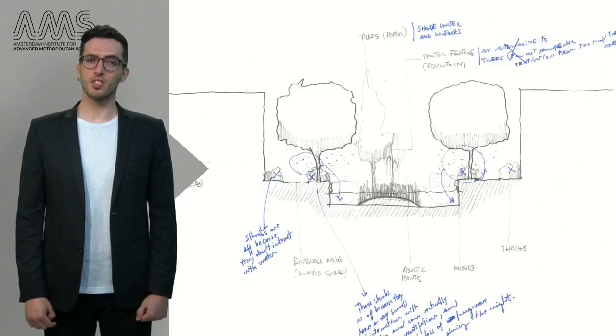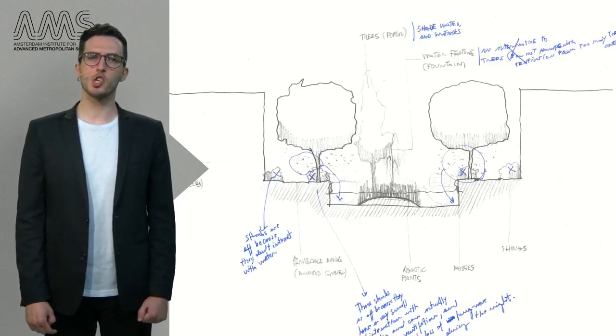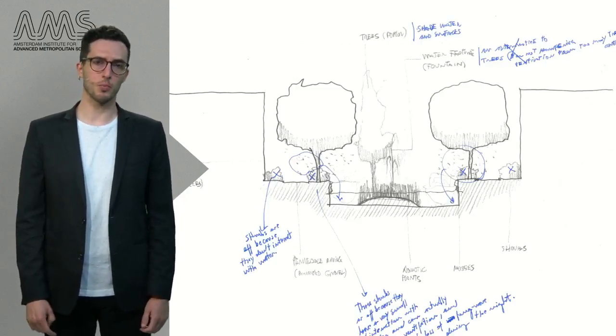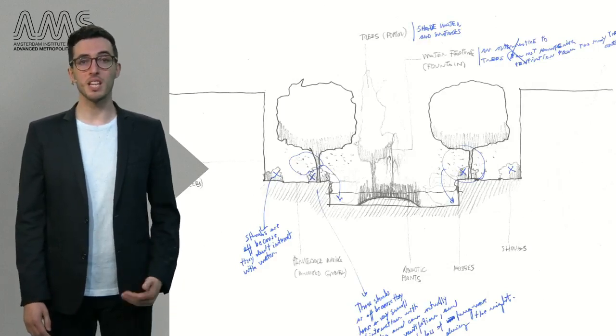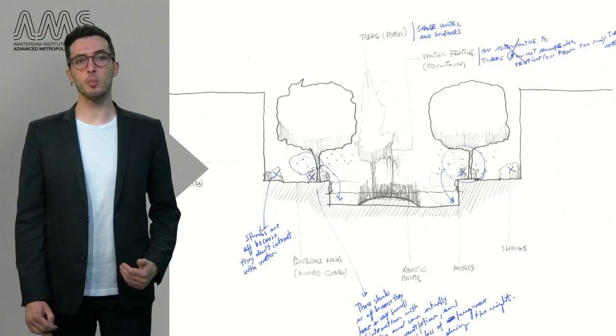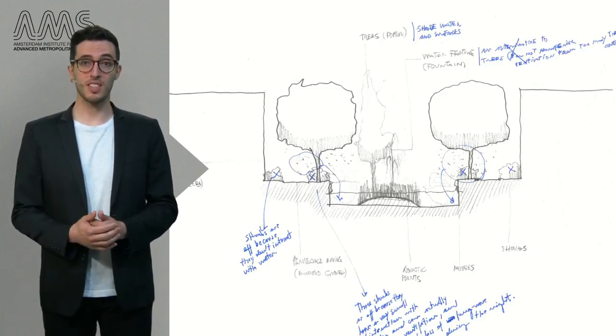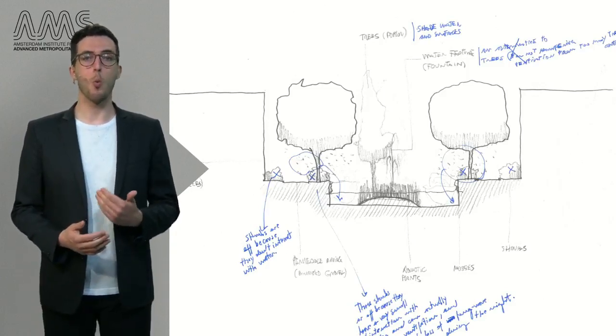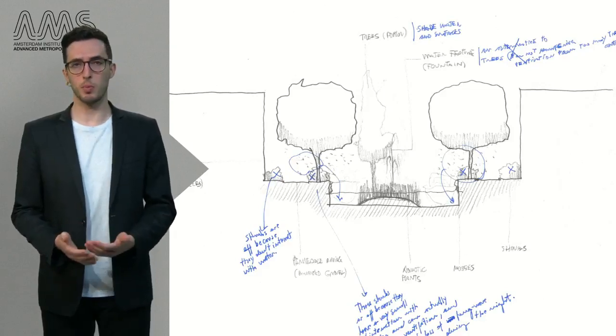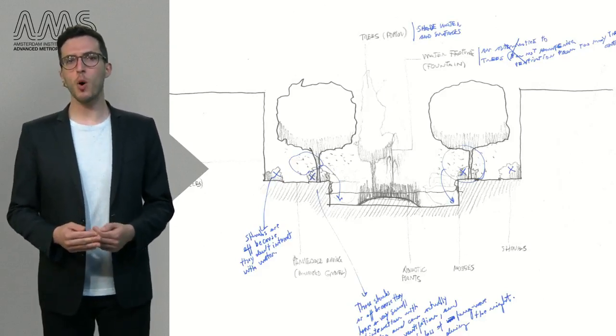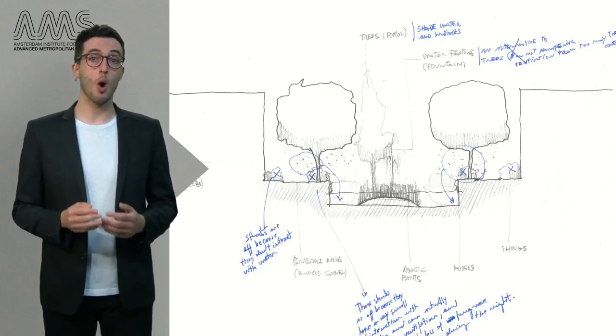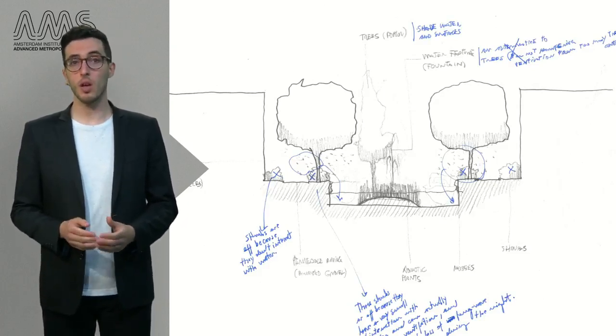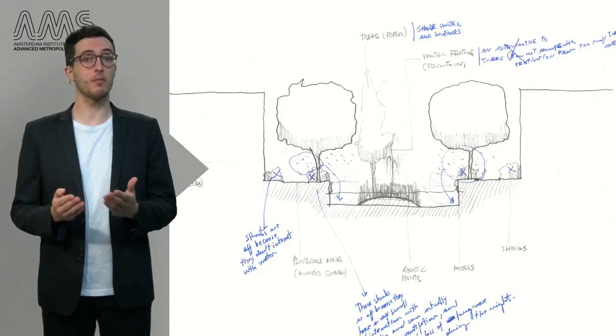Although the project is not finished yet, we can already share some findings about our co-creation process. First, involving stakeholders in different design loops needs to be planned and orchestrated very well. Second, we have to determine why and when to engage people. If we really want people's opinions to fit the designing process, we have to think what should they answer to and how are they able to answer.